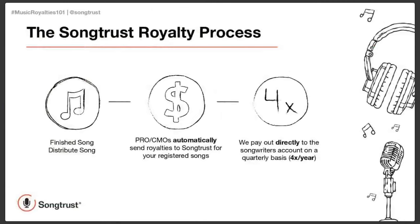In general, when you earn royalties, the process is: you finish the song and distribute it to make sure there are uses and streams. Then the PROs and CMOs automatically send the royalties to SongTrust for the registered songs. So as long as you have added your songs to your SongTrust account, the PROs know who to pay for that writer's and publisher's share. They automatically pay that publisher's share out to SongTrust, and then we pay out directly to the songwriter's account on a quarterly basis — four times a year.